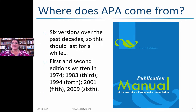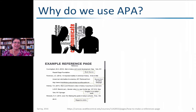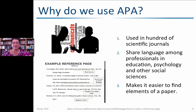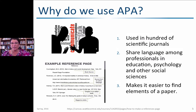Where does APA come from? It's in its sixth edition now and has been around since 1974. It comes from the American Psychological Association. They've contributed a specific style or formatting structure on how to do research and how to present academic papers. We use APA because it's a shared language — there are hundreds of journals that use the APA format — and it gives us a common point of communication between psychology, education, and other sciences.